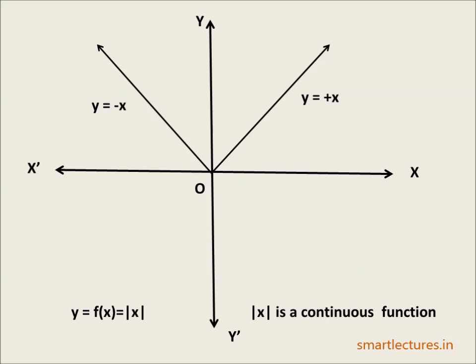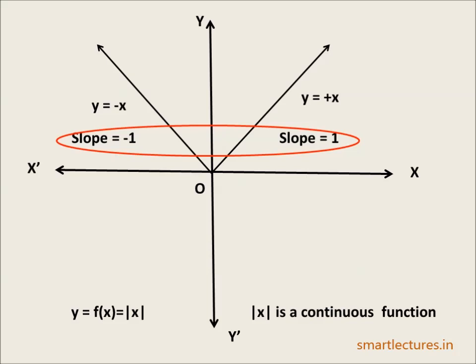But the function |x| is not differentiable at the point 0, or at the origin. The reason is that on the left-hand side, where the function is defined as y = -x, the slope of the curve is equal to -1. On the right-hand side, where the function is defined as y = x, the slope is equal to 1. So the slope on the left-hand side is not equal to the slope on the right-hand side — there is no limiting position of a unique tangent at the origin.